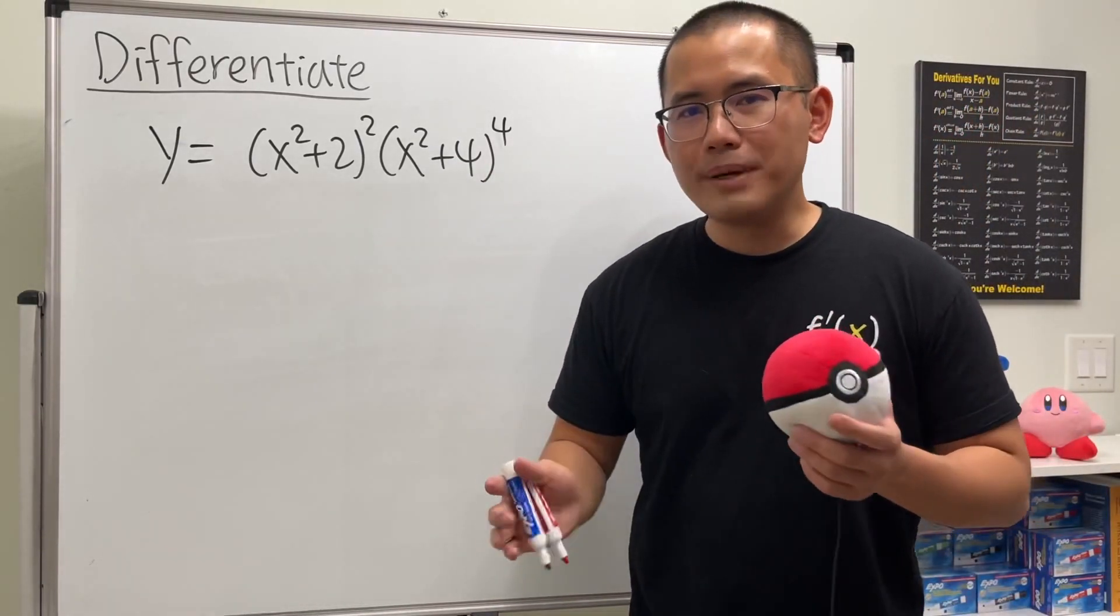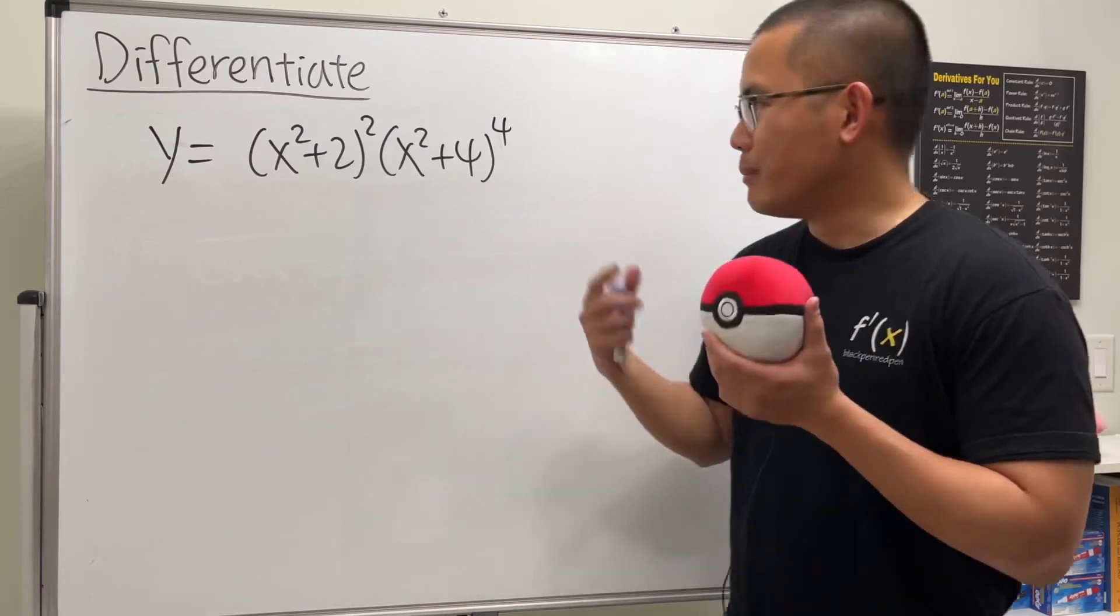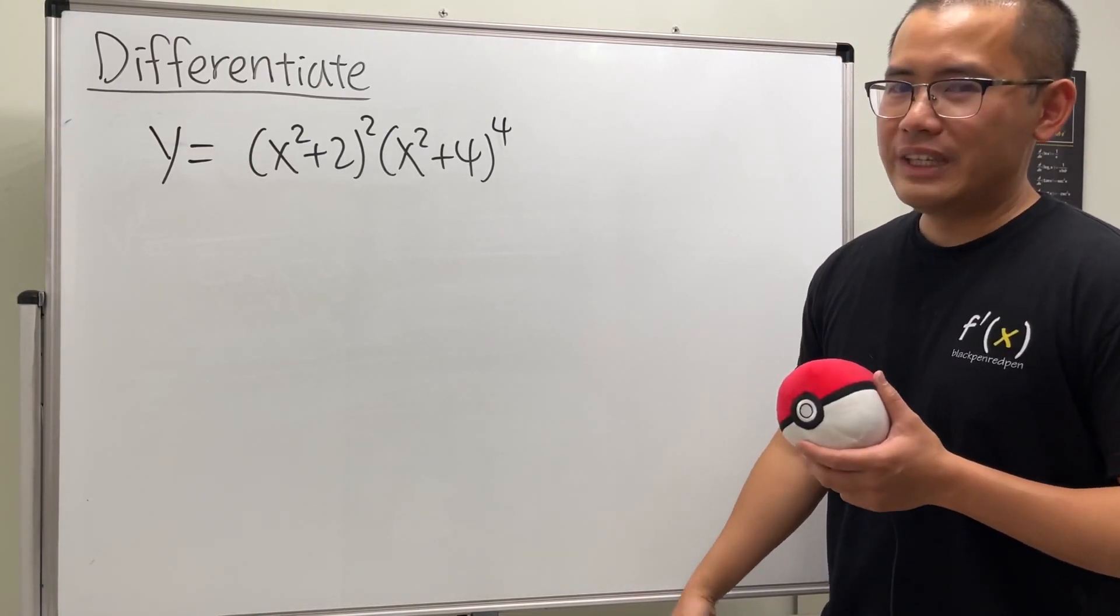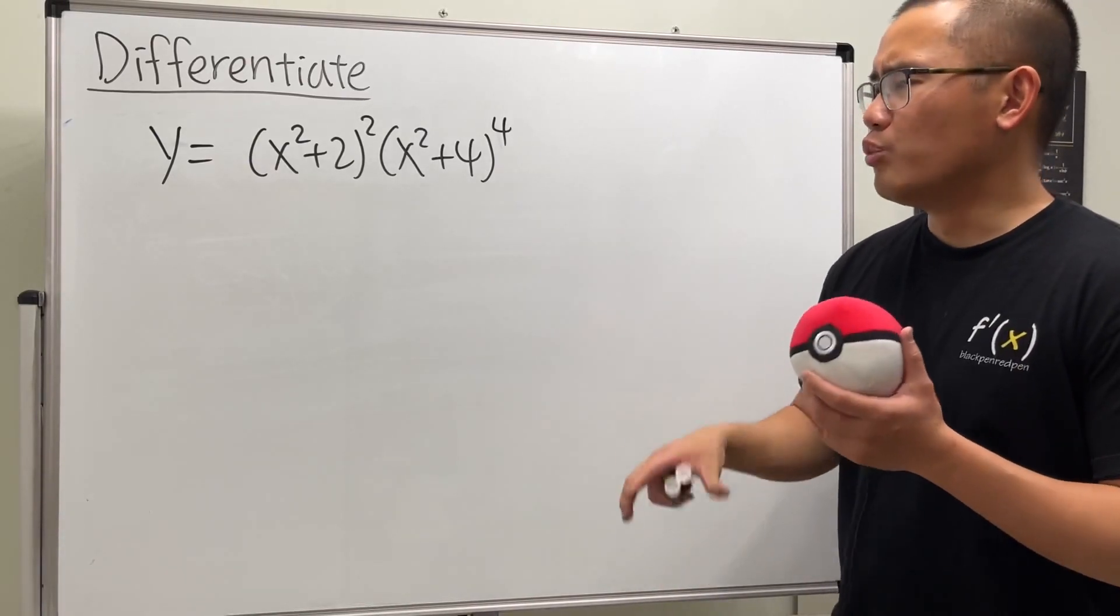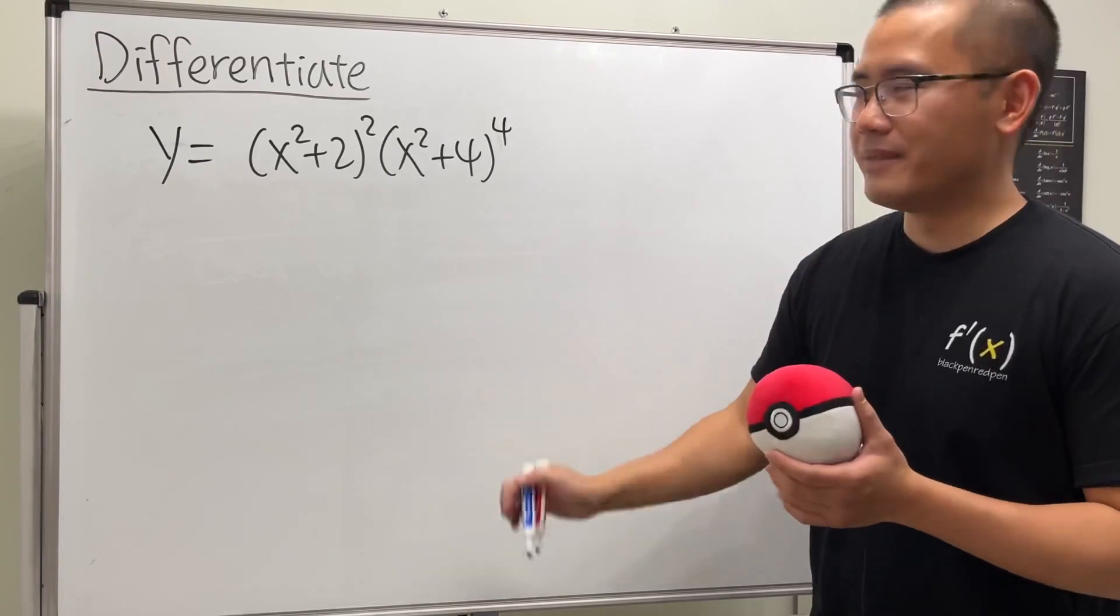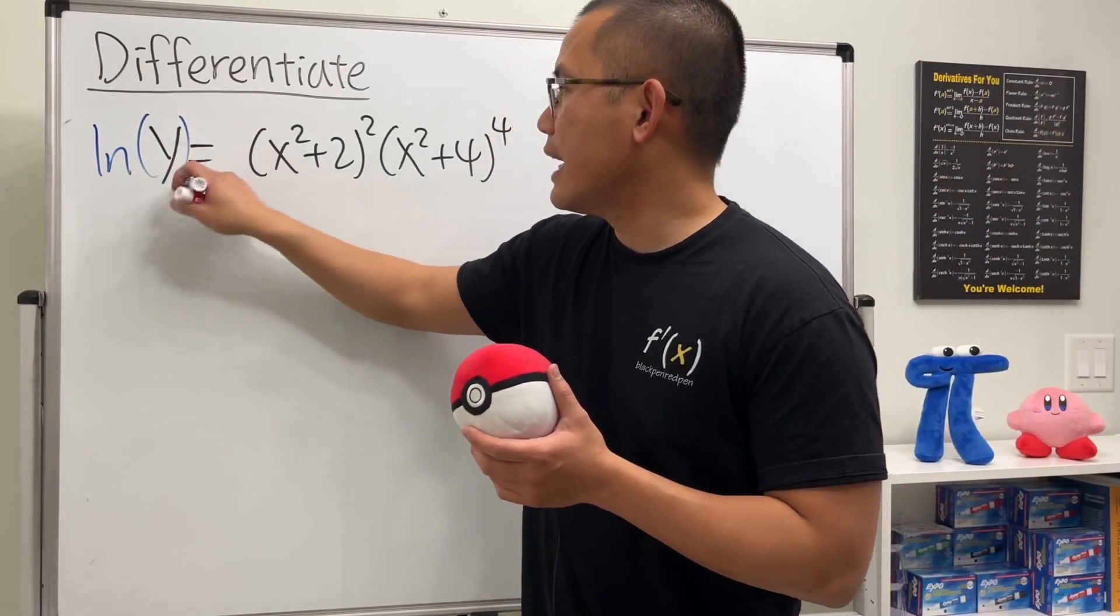In fact for this one it's not so bad to just use the product rule and also the power rule and the chain rule. But you can imagine if we have more factors or more complicated stuff then the following way is much better, and that is we first take natural log on both sides.